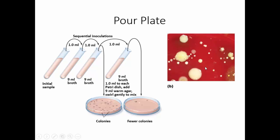The pour plate is used if you're interested in how many organisms are in something. Typically, serial dilutions are made of the initial sample — usually one-to-ten dilutions because the math is easier. A small portion of the dilution is placed in liquid agar, mixed, poured into a plate, and allowed to solidify. All individual colonies obtained are called colony forming units and represent one organism. The disadvantage is that some colonies are embedded in the agar and you can't access them to work with.